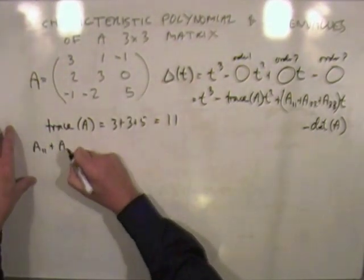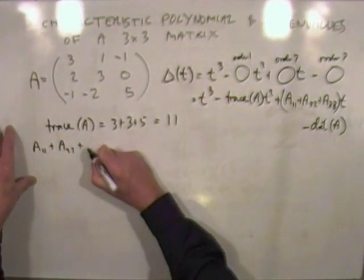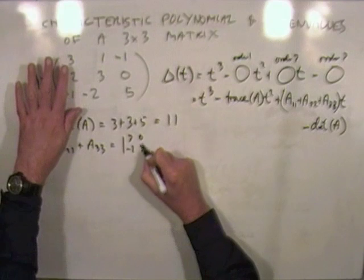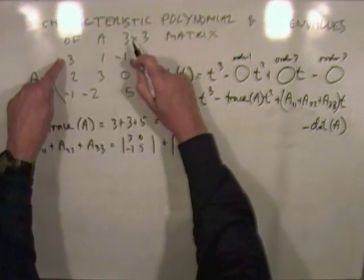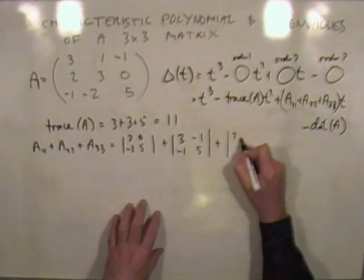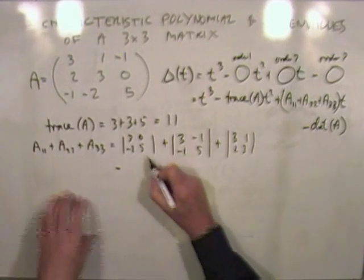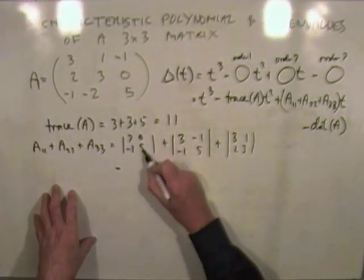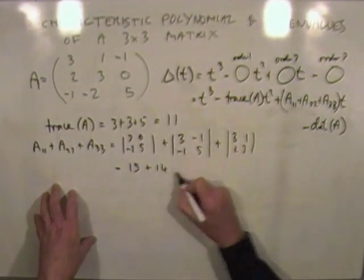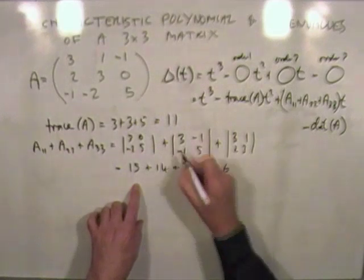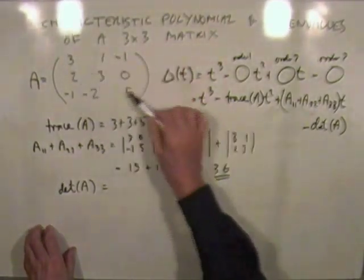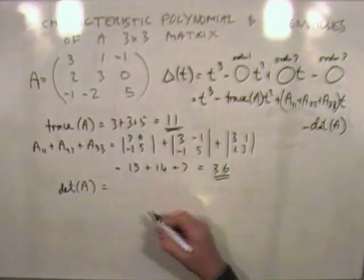Now computing the three 2×2 principal minors: A₁₁ is the determinant of [3, 0; -2, 5], giving fifteen minus nothing, so fifteen. A₂₂ is the determinant of [3, -1; -1, 5], giving fifteen minus one, so fourteen. A₃₃ is the determinant of [3, 1; 2, 3], giving nine minus two, so seven. The sum of these principal minors of order two is fifteen plus fourteen plus seven, which equals thirty-six.